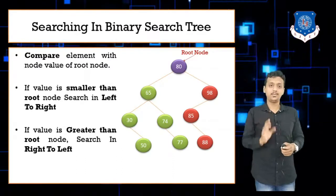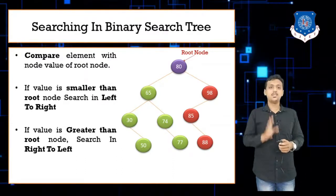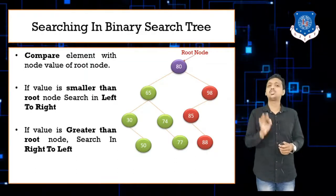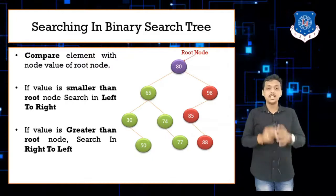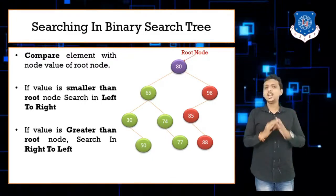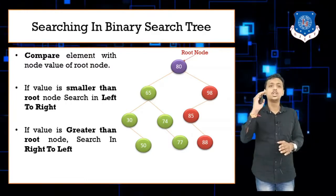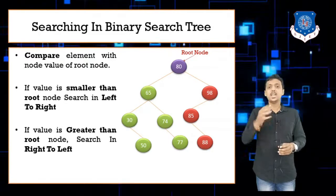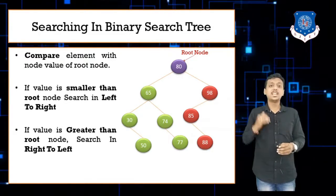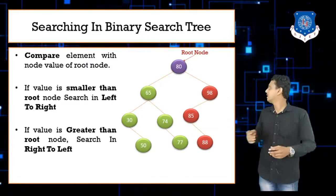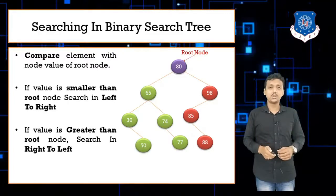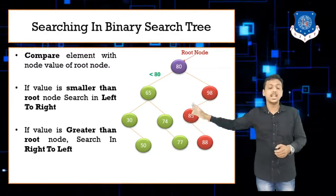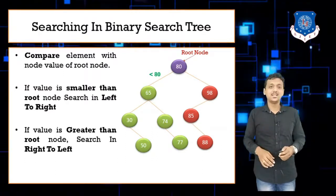Suppose you want to find 85. First, always start any operation in a binary search tree from the root node — remember this. Here the root node is 80. To search key value 85, compare it with 80. If your value is not greater than 80, move towards the left side; if it is greater than 80, move towards the right side.